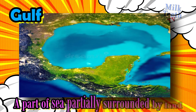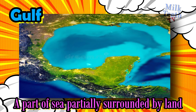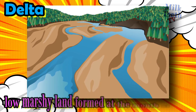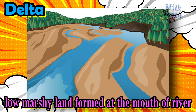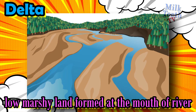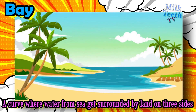Gulf: a part of sea partially surrounded by land — it is basically a big area of sea surrounded with the coastline. Delta: a low marshy land formed at the mouth of a river. It is formed when the river gets divided into a number of channels and the soil becomes marshy. Bay: a curve where water from the sea gets surrounded by land on three sides — it is smaller than a gulf.